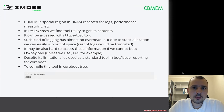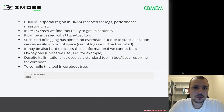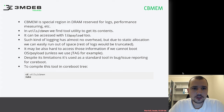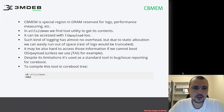CB-MEM is a special region in DRAM reserved for logs, performance measuring, and various other information that coreboot stores during boot time. The source code for the tool that extracts that information from memory is in the coreboot source tree, in the location utils/cbmem.